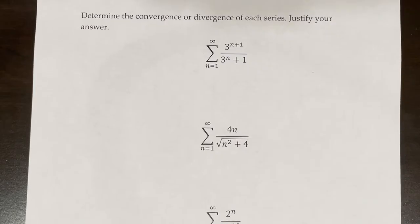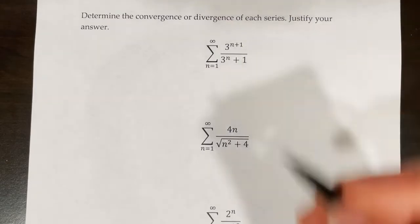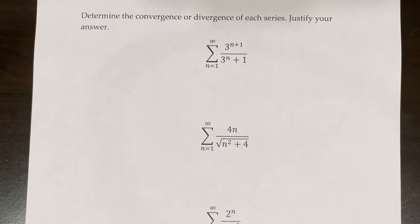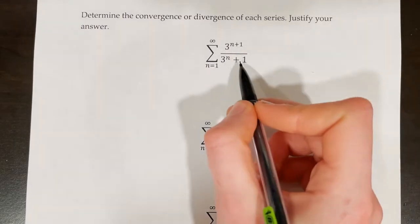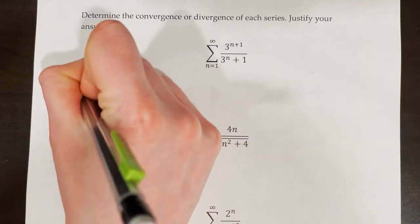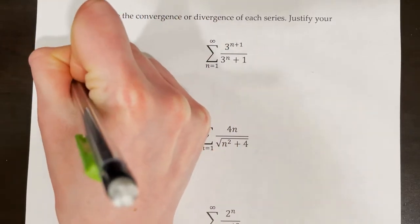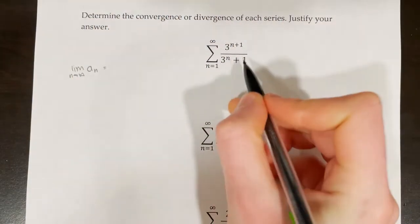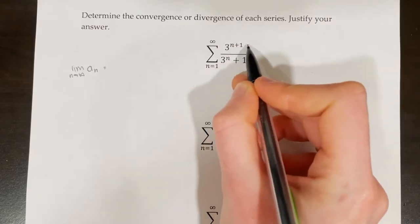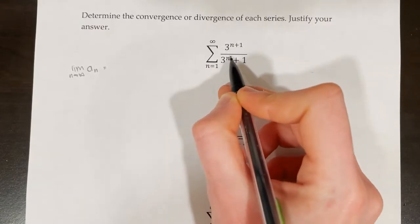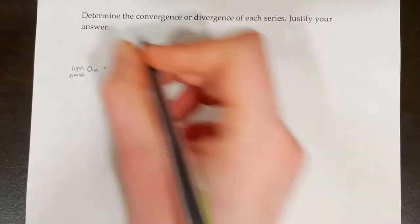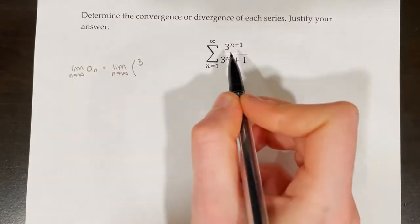Determine the convergence or divergence of each series and justify your answer. For the first one, we find the limit as n approaches infinity of a sub n, where a sub n is 3 to the power of n plus 1 over 3 to the power of n plus 1. We rewrite 3 to the power of n plus 1 as 3 to the power of n times 3 to the power of 1, since these are equivalent, and leave the denominator as 3 to the power of n plus 1.